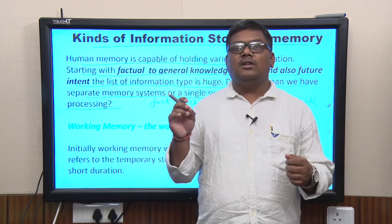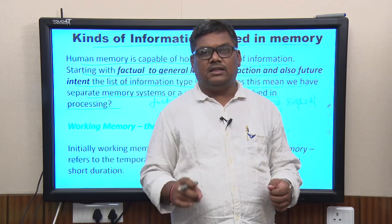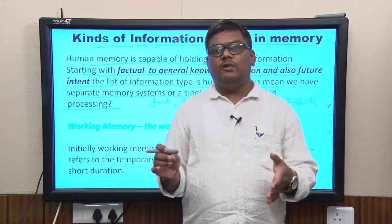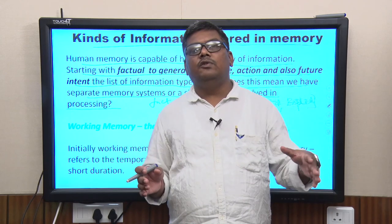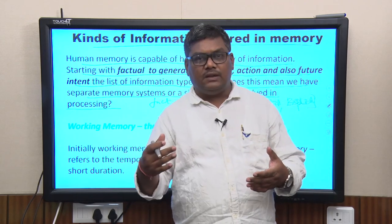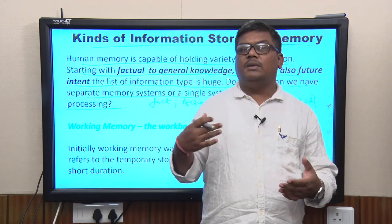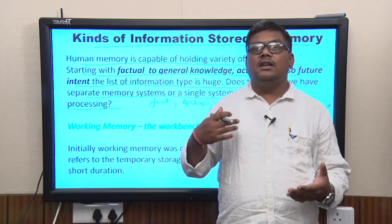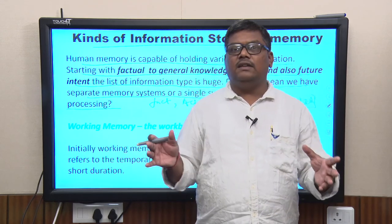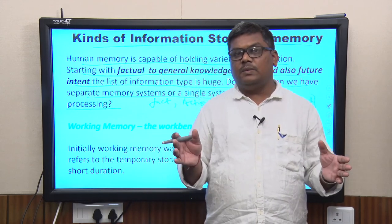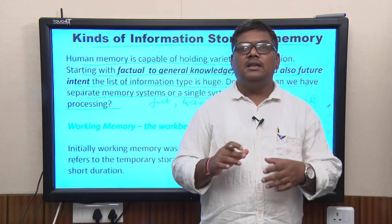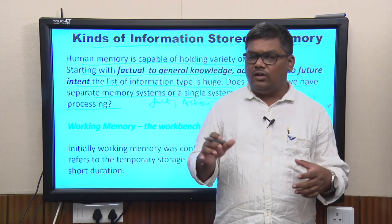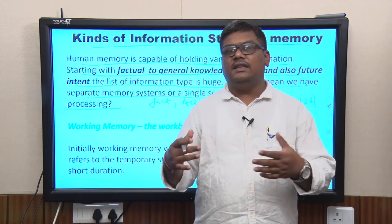Then we moved on to perception, which is making meaning of sensations. We looked at perception from two viewpoints: the global (ecological) viewpoint, which says that all information falling on the retina is enough to create meaning of the physical stimulus, and the local viewpoint, which says perception is a five- or six-step process.